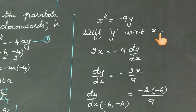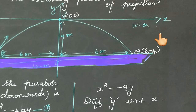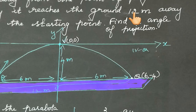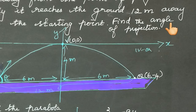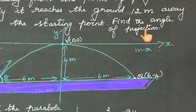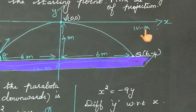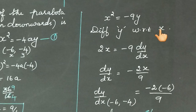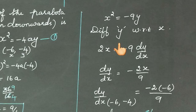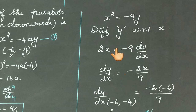Now we differentiate. We need to find the angle of projection, and dy/dx equals tan θ. Differentiating x² = −9y with respect to x: 2x = −9 × dy/dx. Therefore, dy/dx = −2x/9.